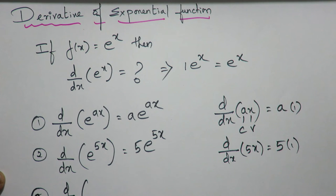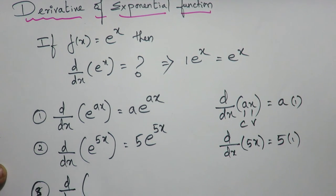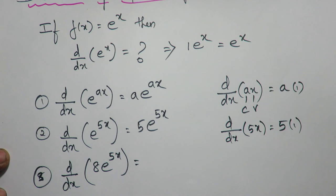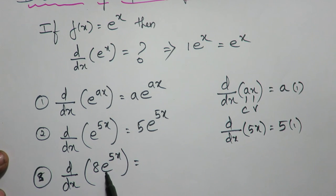d/dx of 8 times e^5x. This is a constant times a variable. Why do we say the exponential is a variable? Because the exponent is x. So we have a constant and a variable. Keep the constant as it is and differentiate the variable.